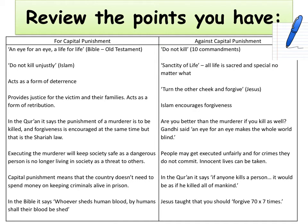Capital punishment can also be seen as a form of justice for the victim and their families — it acts as a form of retribution and fulfils the idea of an eye for an eye. In the Quran it says that the punishment for a murderer should be for that murderer to be killed. Although forgiveness is encouraged in the Quran, Sharia law states that the murderer should be killed. Executing a murderer will keep society safe as a dangerous person is no longer living in society, which could be seen to fulfil the teaching of love your neighbour.